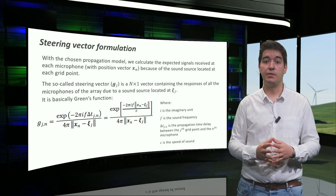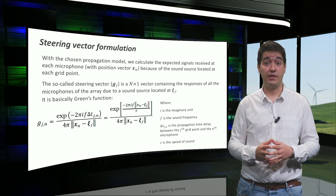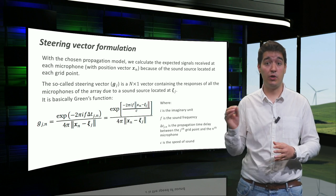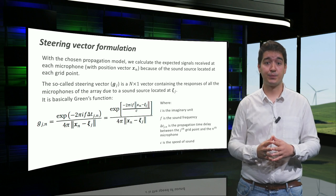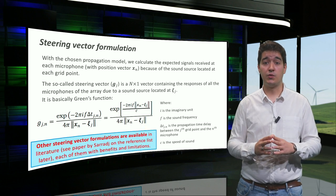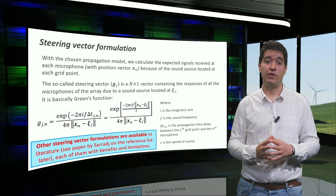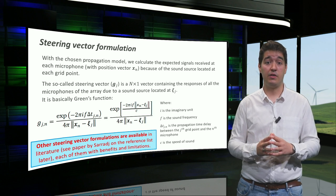Here, i is the imaginary unit, F is the frequency, delta T is the time delay between each grid point and each microphone, and C is the speed of sound. This is just one of the many formulations for the steering vector, but many more can be found in literature.